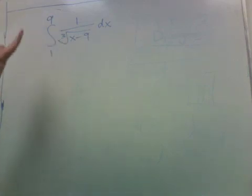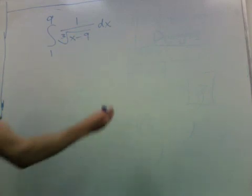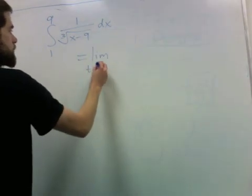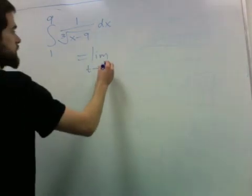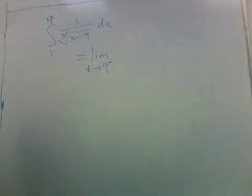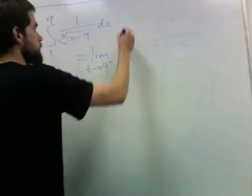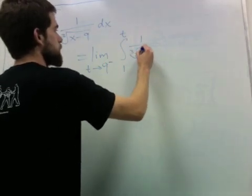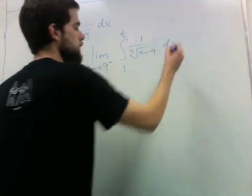This is discontinuous when x is 9 because the bottom goes to 0. So it's defined as this limit, the limit as t goes to 9 from the left of the integral from 1 to t of the original thing.